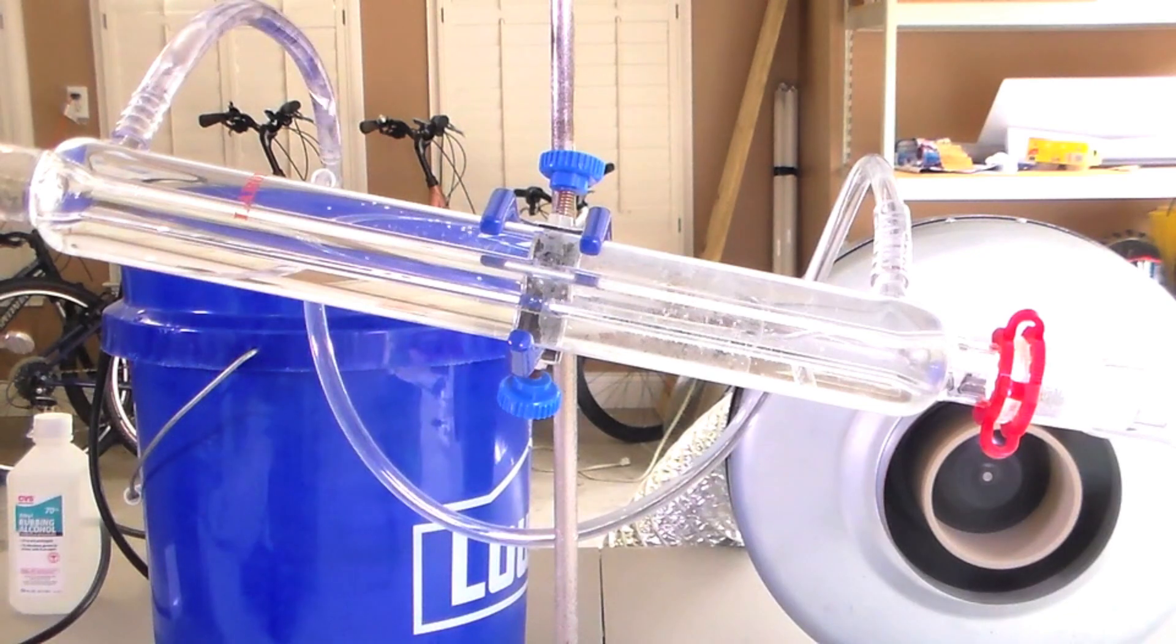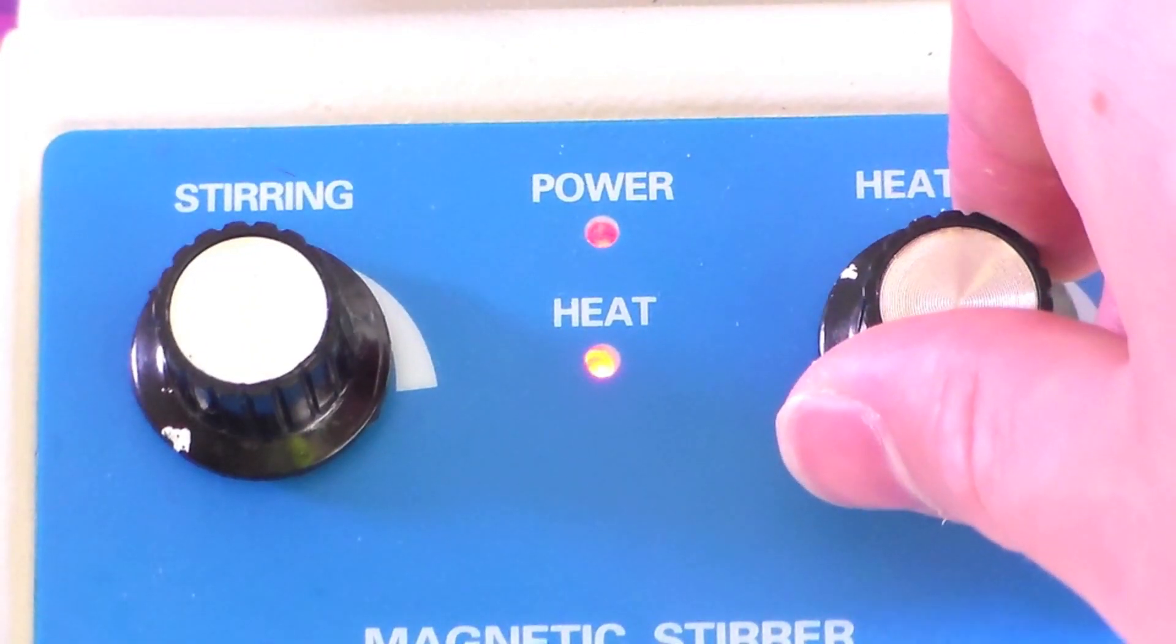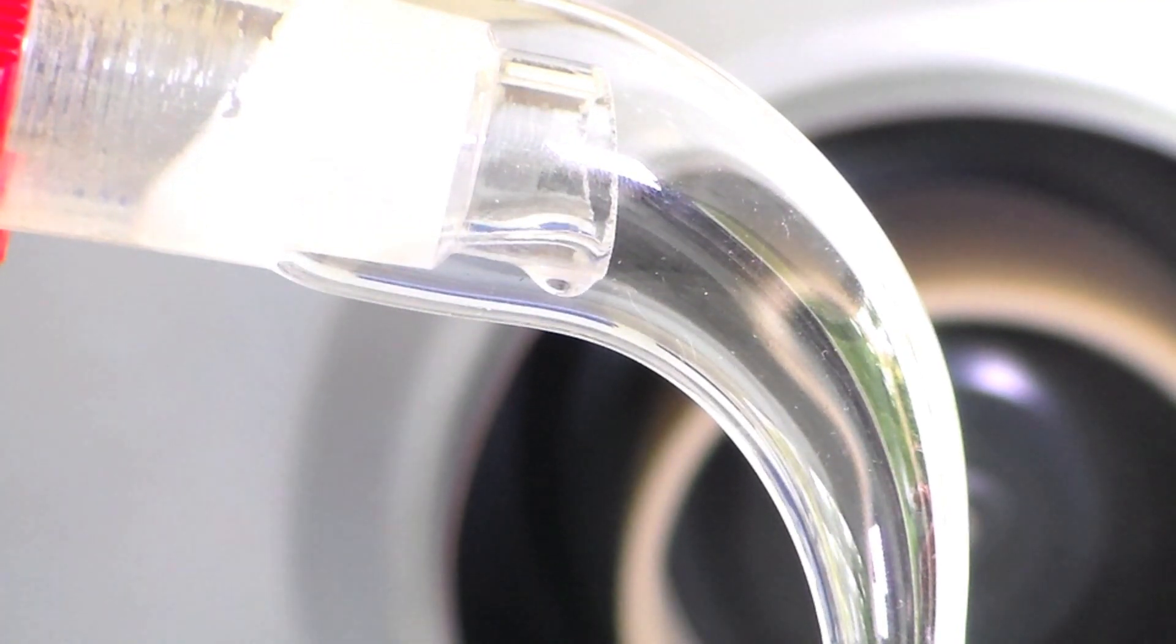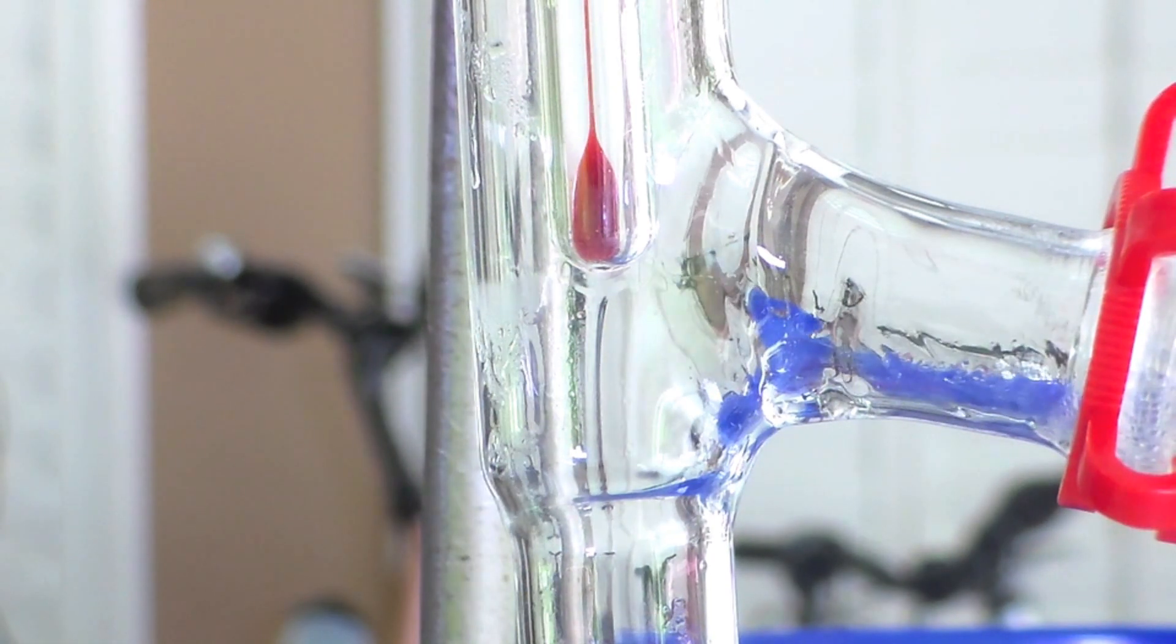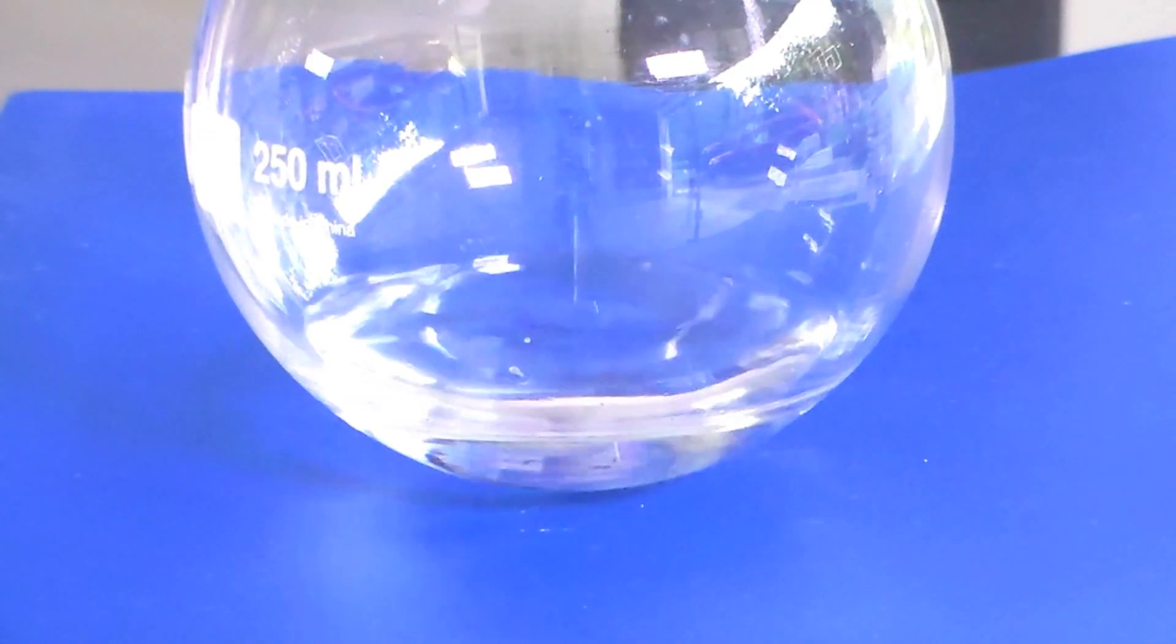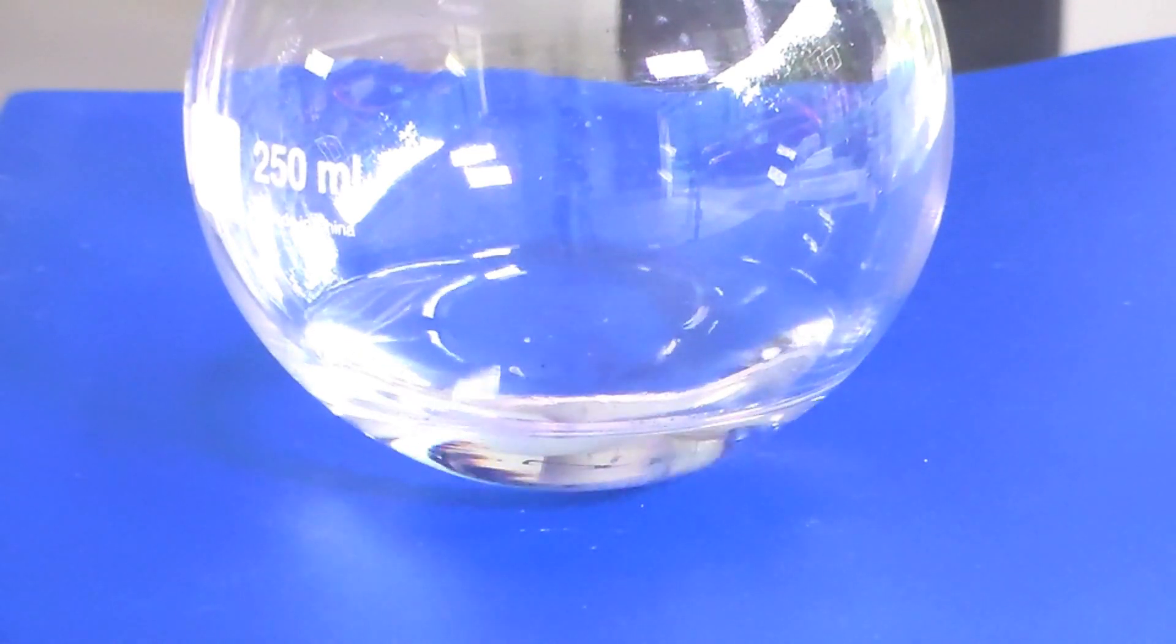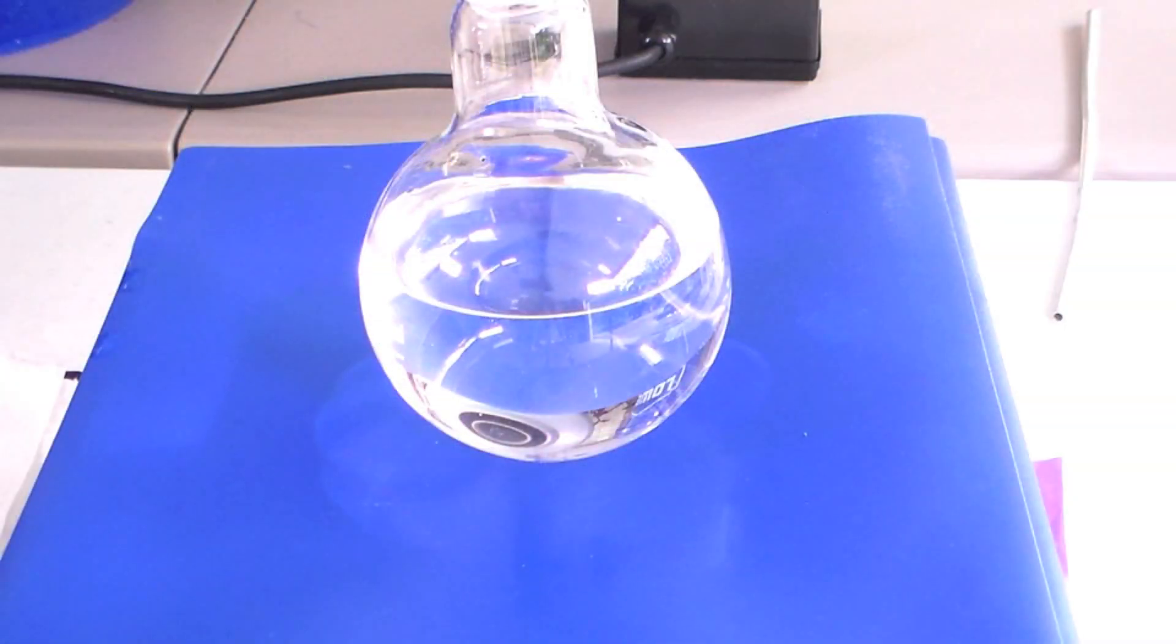Heat the flask until liquid begins to distill over at 78.2 degrees Celsius. This will be a mixture of primarily the ethanol and water azeotrope, but it will also contain the trace amounts of acetone present.